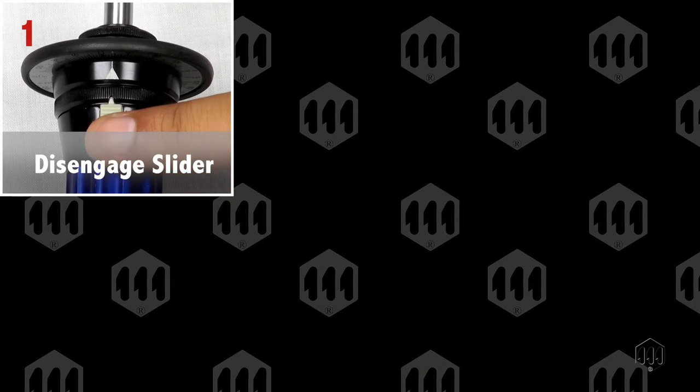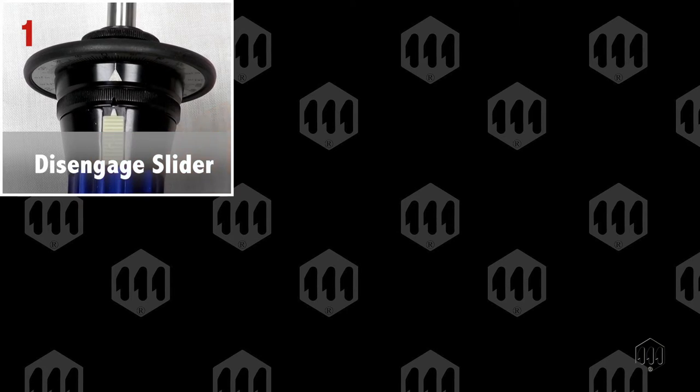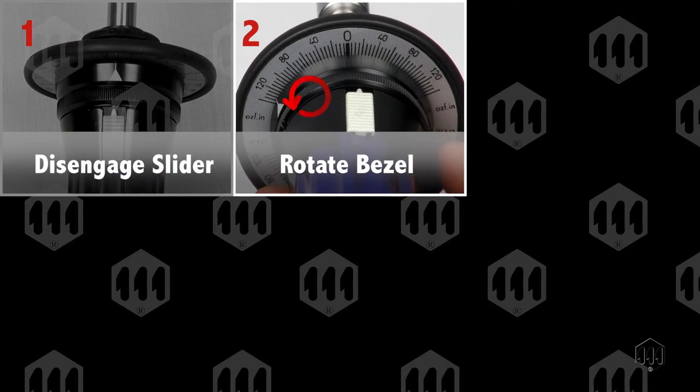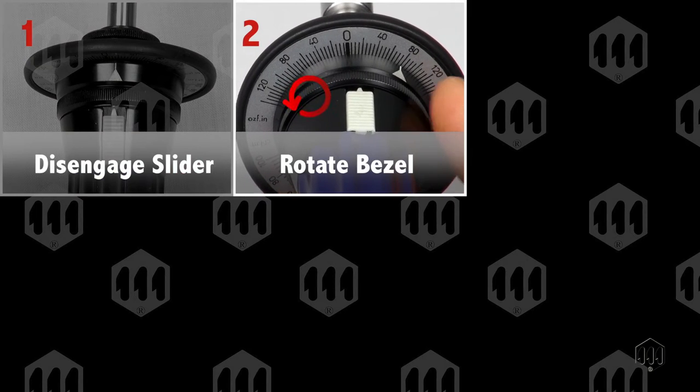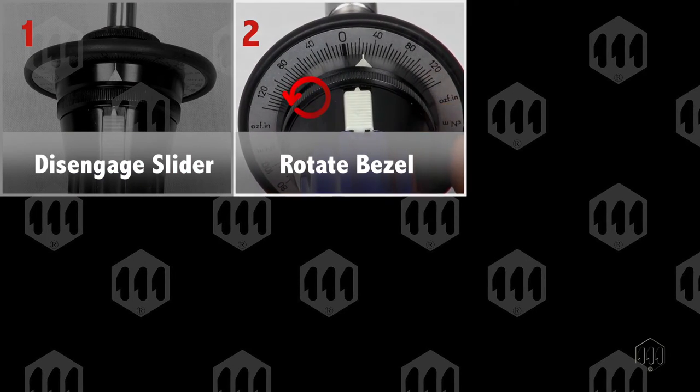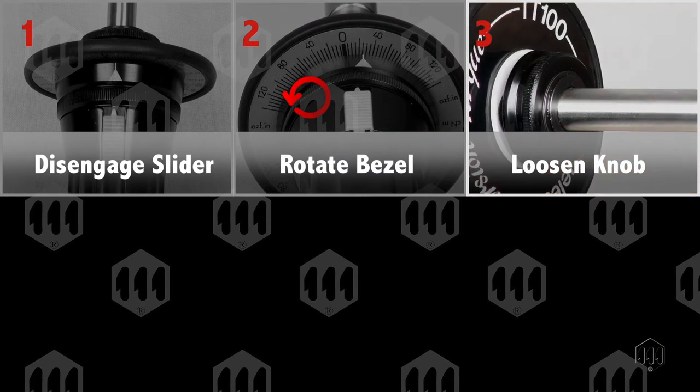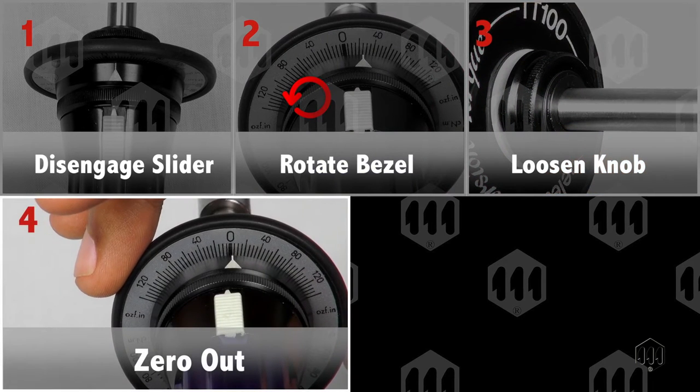Peak mode is activated by disengaging the white plastic slider. To measure clockwise torque, rotate the pointer bezel counter-clockwise to the stopper. Next, loosen the knob, zero out the scale, and re-tighten.